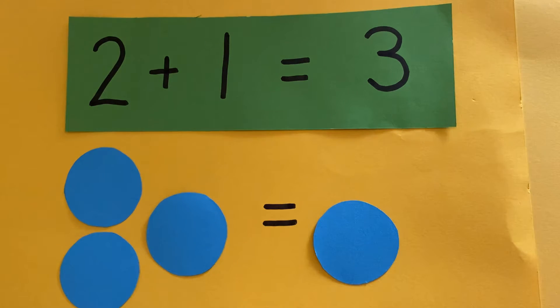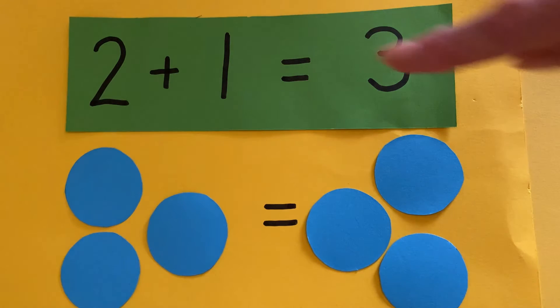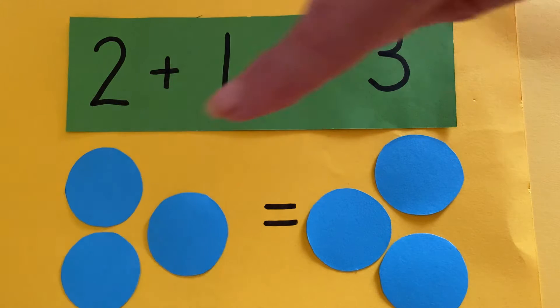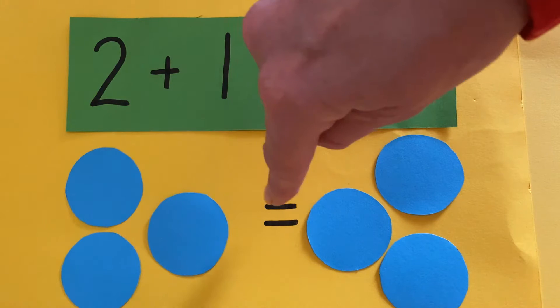And the number sentence ends in three. So I'm going to use three counters. One. Two. Three. Oh, look. There's three counters that side. And three counters this side.